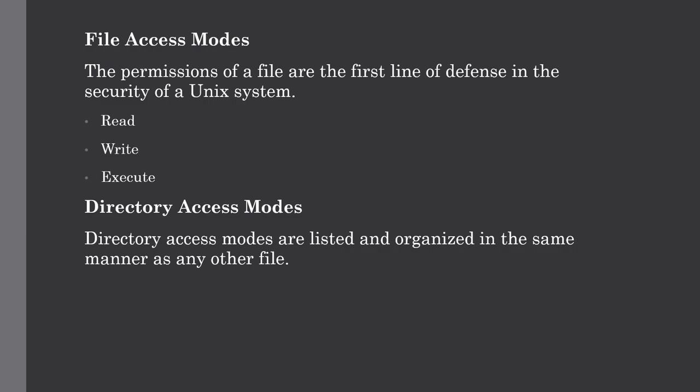Directory access modes are listed and organized in the same manner as file access modes. They are similarly read, write, and execute, but there are some differences. Read access to a directory means the user can read the contents and look at the file names inside the directory, because a directory can also contain files, and we can see those files if we have read permission.